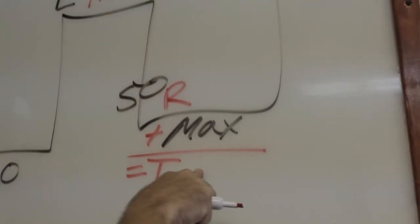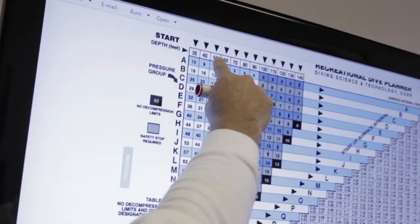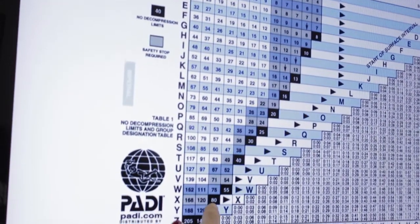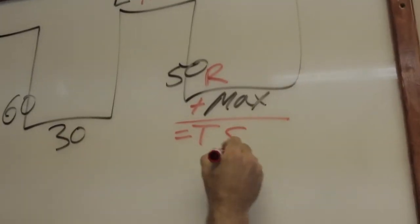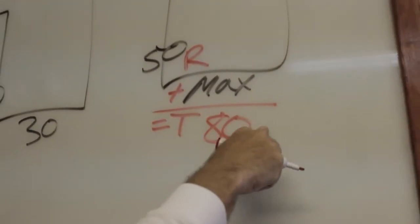I know my total bottom time may not exceed the bottom number. At 50 feet, my total bottom time may not exceed 80 minutes. I'm going to write 80 minutes down right here. My total may not exceed that.